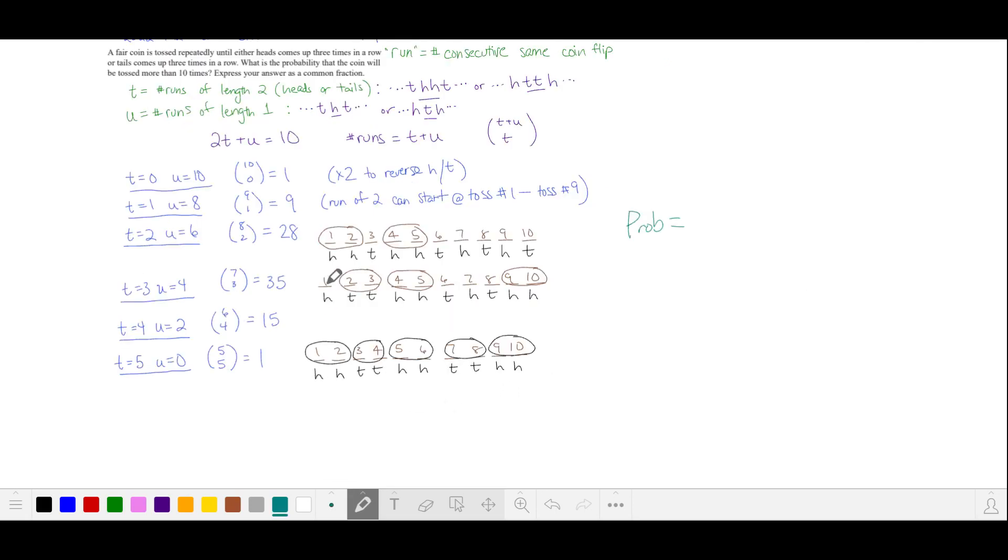Our probability is going to be the total number of possible sequences. We're going to multiply this by 2 because we can switch the heads and the tails. We're going to divide by the total number of sequences of heads and tails in 10 coin flips and that's our answer.